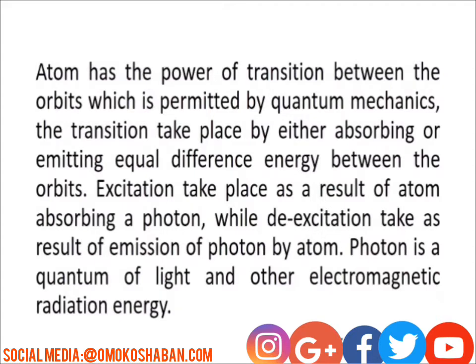Atoms have the power of transitions between orbits, which is permitted by quantum mechanics. We are going to discuss some quantum mechanics in our next video. The transitions take place by either absorbing or emitting energy equal to the difference between the orbits. Excitation takes place as a result of atoms absorbing a photon, while de-excitation takes place as a result of emission of a photon by the atom. A photon is a quantum of light and other electromagnetic radiation's energy.